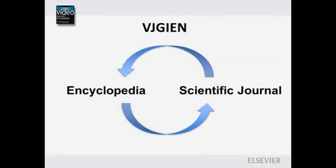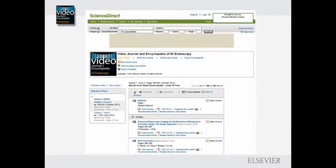Now Video Journal ushers in a new chapter in video journal publication, starting the scientific journal section. The encyclopedia and journal sections are interlinked and they build on each other. All related video manuscripts are linked through ScienceDirect.